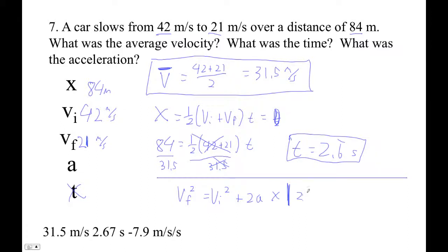Okay, so the final velocity 21 squared equals 42 squared plus 2 times a times 84. Next step is, let's see, I guess it's 21 squared minus 42 squared is equal to 2 times a times 84.